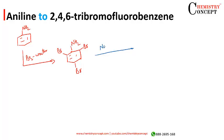Then treat it with NaNO2 and HCl at 0 to 5 degrees Celsius to form the diazonium salt. That's it.